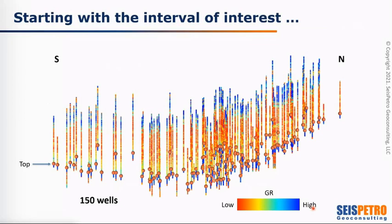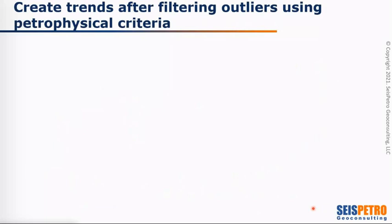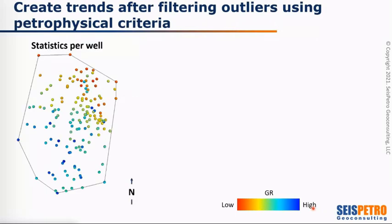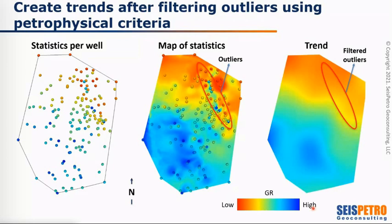We start with an interval of interest — typically we need at least one top, and we prefer to work with one top around the interval of interest. We then select what we call a statistics interval, which is typically the same thickness independently of stratigraphy, so it has basically the same number of samples around your entire area. In this example, we have 150 wells. We create the trends after filtering the outliers using petrophysical criteria. We calculate statistics per well — not the average, but the P10, P90, P20, P80, or P50, depending on the type of shift and type of log. We map the statistics, verify that the outliers are really outliers and not a geology feature, and then we create the trends used for doing the global normalization.